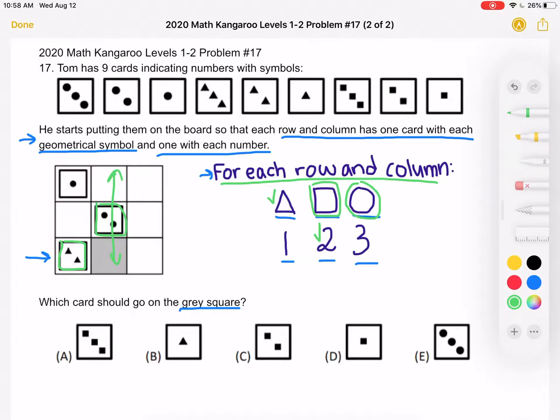For each row and column, we have a card with triangles, one with squares, and one with circles. We cannot have two with circles in the same column or row.